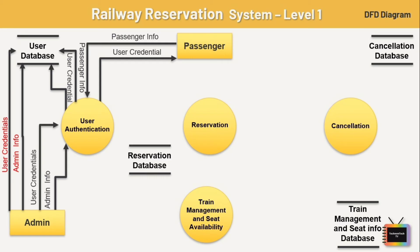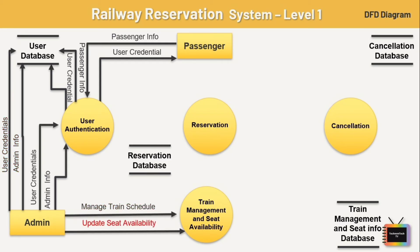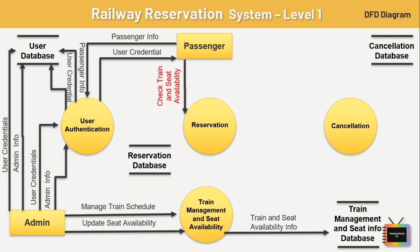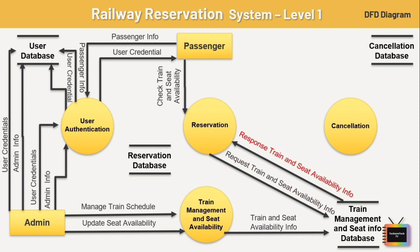Next, admin manages train schedule and seat availability, and all this information is shared with the train management and seat availability process. The same information is stored in the train management and seat availability database. The passenger then searches for train and seat availability details — the reservation process requests that data from its database, the database shares the information with the reservation process, and the passenger gets an update about train and seat availability.